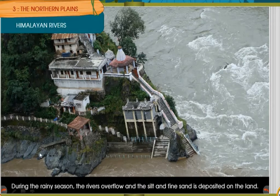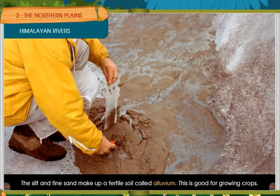The silt and the fine sand make a fertile soil that is called Alluvium. This type of soil is very good for growing crops.